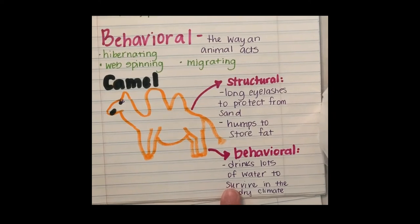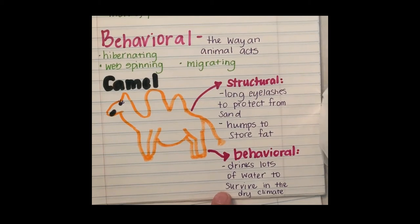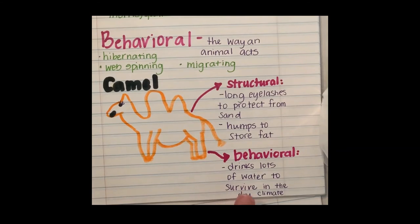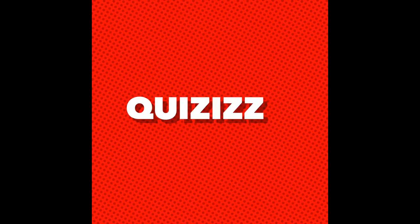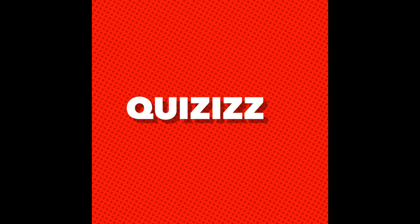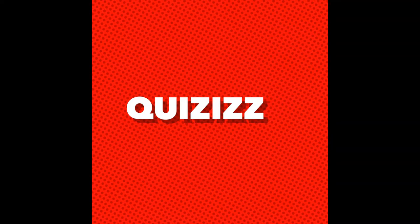For behavioral adaptations, camels drink a lot of water when they do find it, because it helps them survive in a dry climate. They might drink more water than your average animal because they don't have free access to water the way other animals do in different habitats. This is one example of a behavioral adaptation that a camel has. Go ahead and find the quizzes link for Ms. Broberg's class underneath the video description and take your quiz. Have a wonderful weekend!